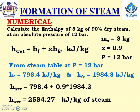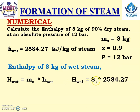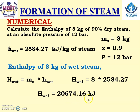Is this the final answer? No, because mass of steam is given. We have calculated specific enthalpy (small h), but we need total enthalpy (capital H). Total enthalpy of 8 kg of wet steam: H_wet = mass × h_wet = 8 × 2584.27 = 20,674.16 kJ. This is the correct answer for the numerical.